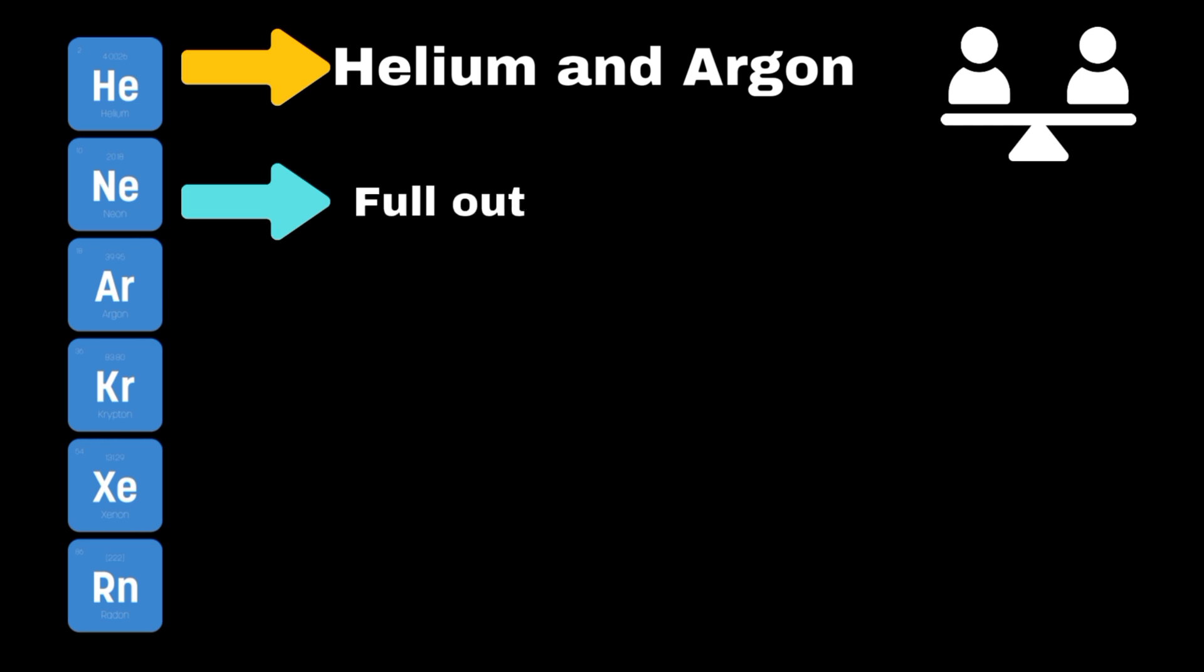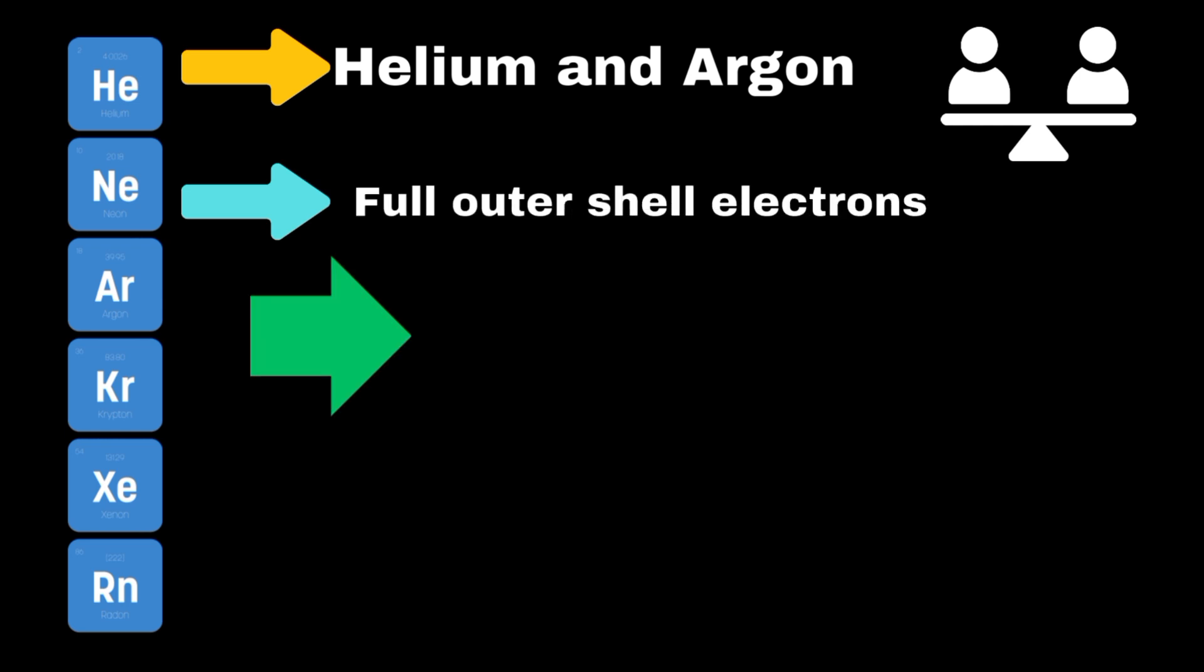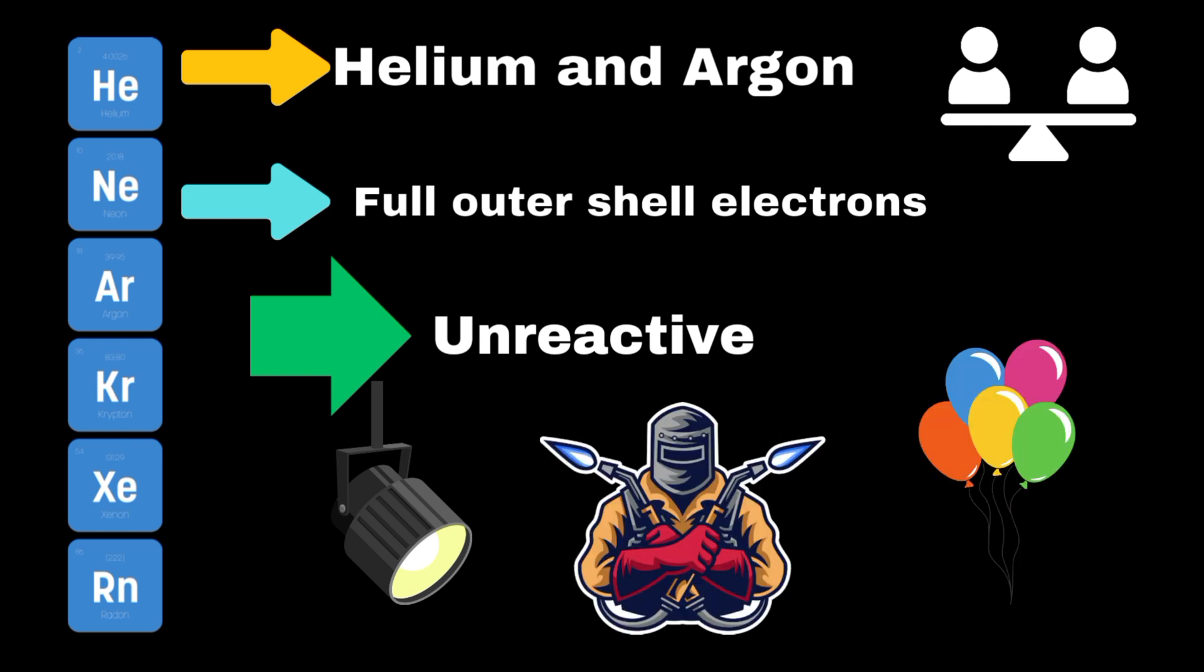Noble gases, such as helium and argon, are known for their stability because they have a full outer shell of electrons. These gases are unreactive under normal conditions and find use in lighting, welding, and even in balloons.